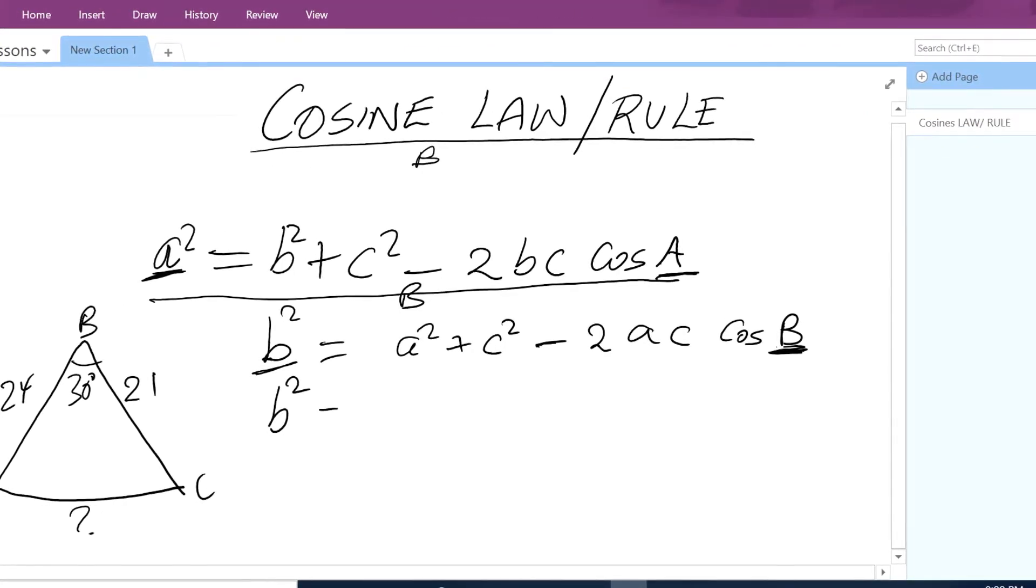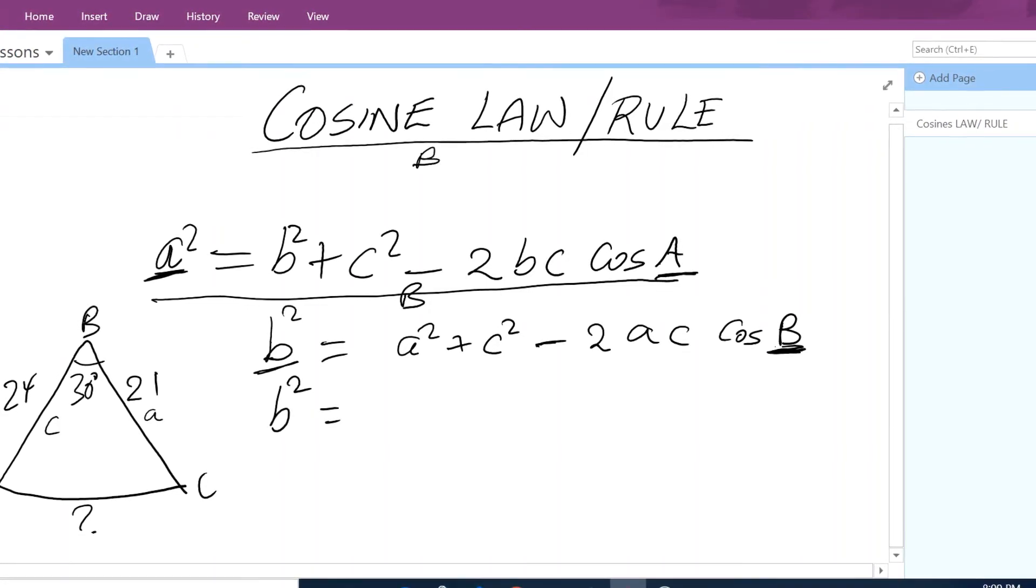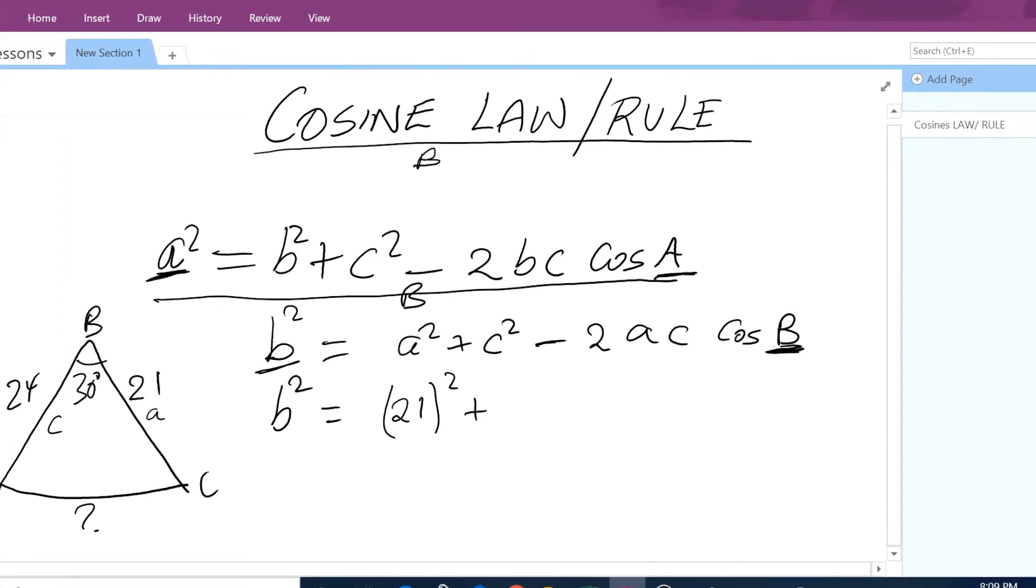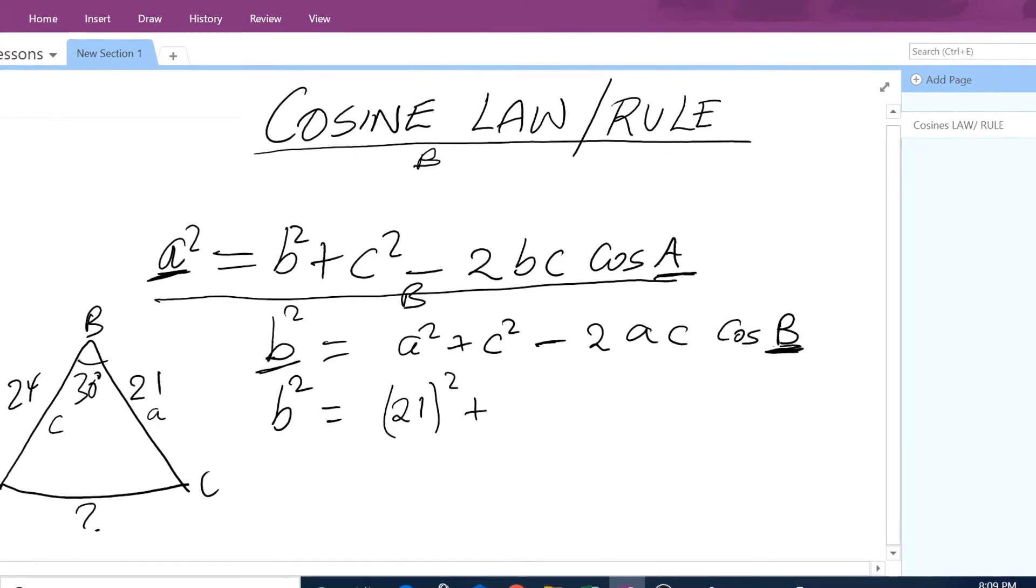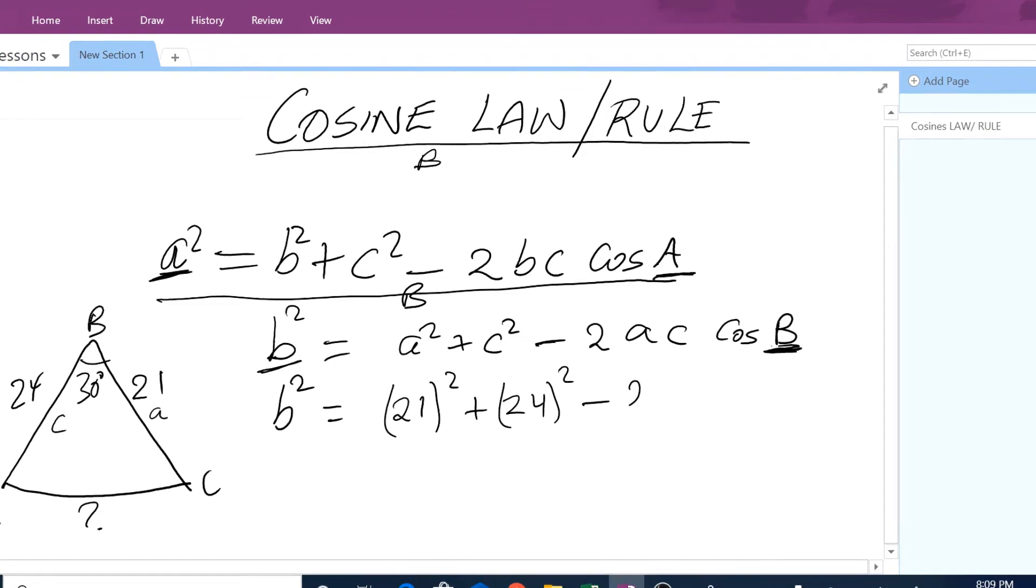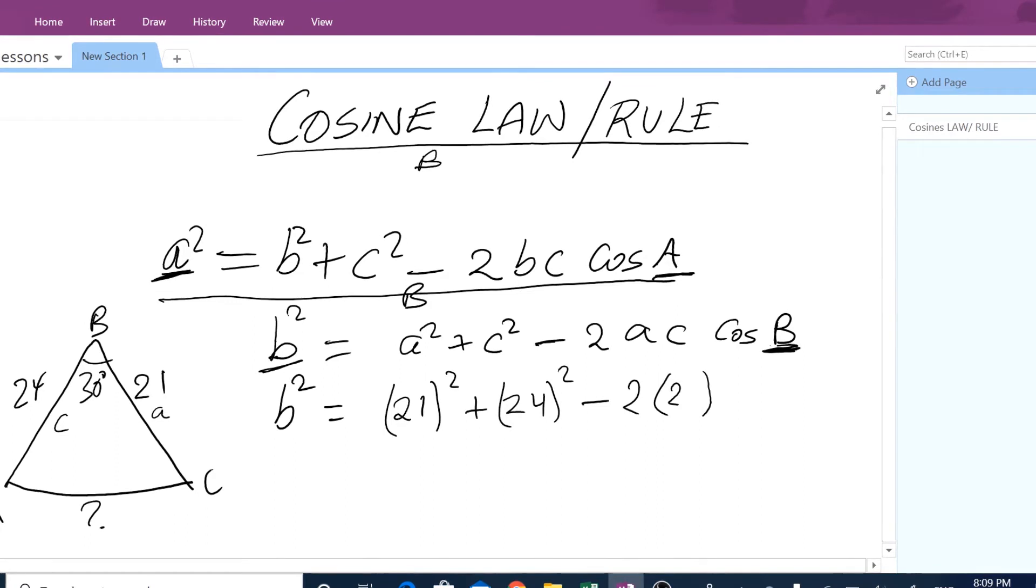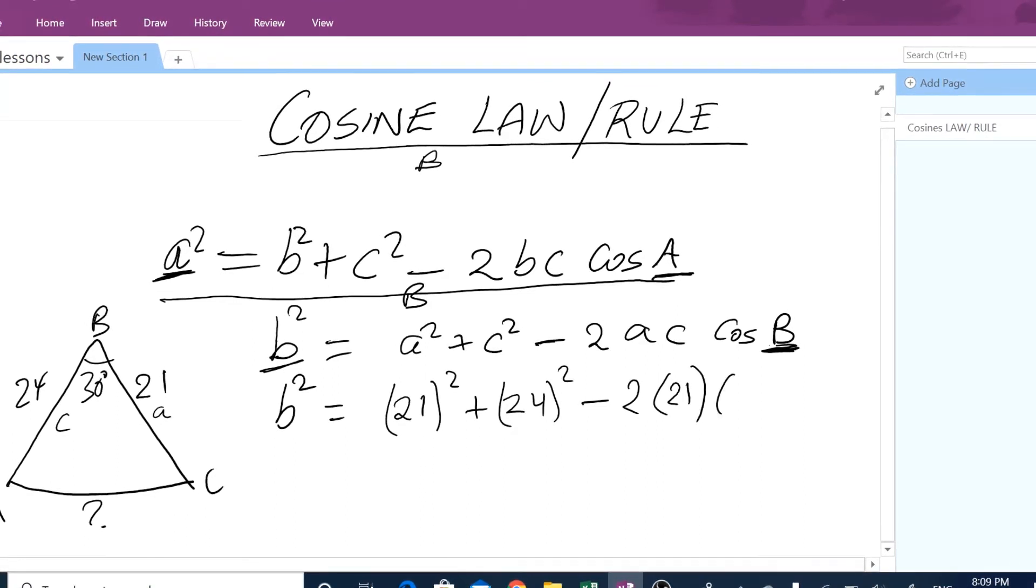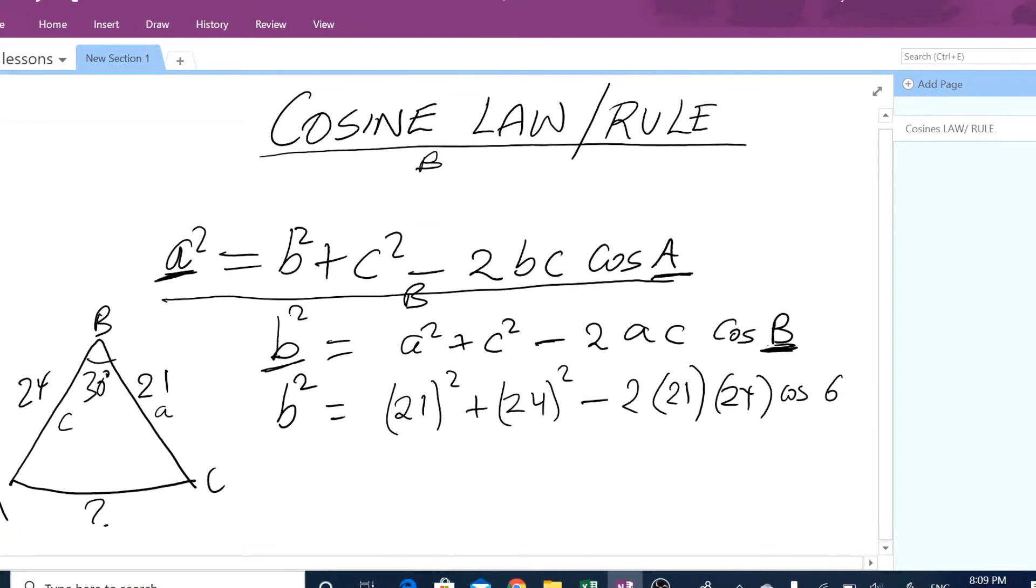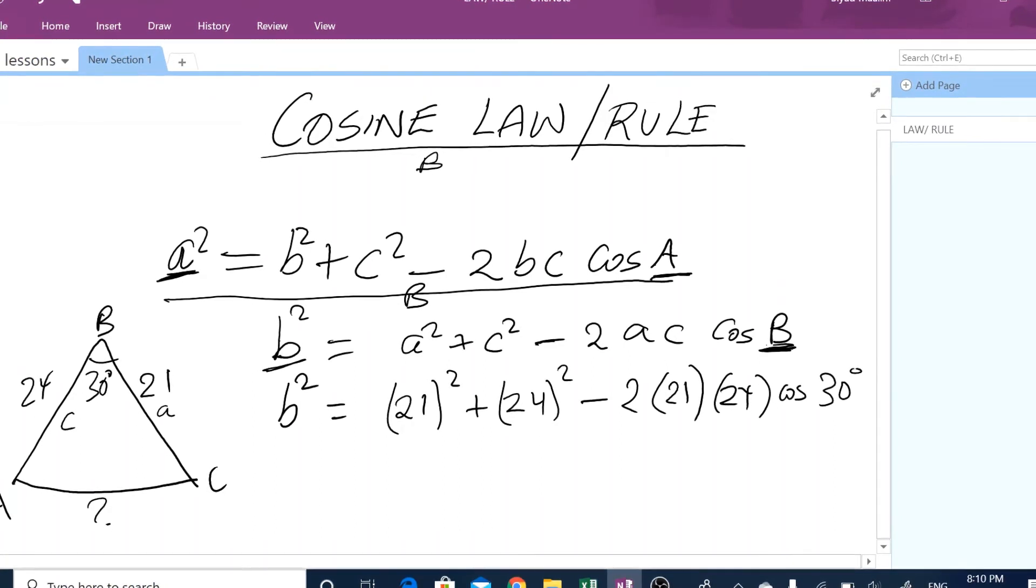b squared equals, what is a? a is given as 21. This is side a, this is side c. 21 squared plus, what is c? c is 24. So 24 squared minus 2 multiplied by 21 times 24, cos of angle 30, which is given.